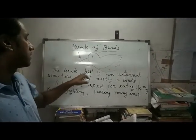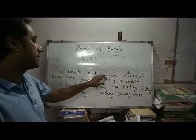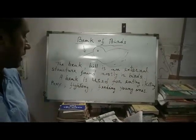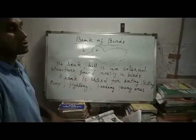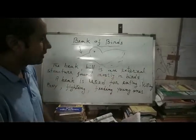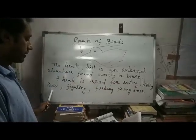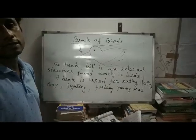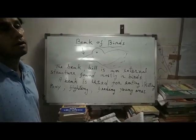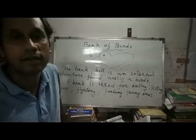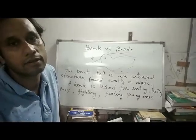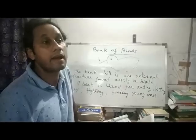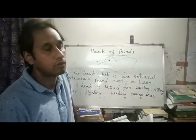The beak or bill is an external structure found mostly in birds. A beak is used for eating, killing prey, fighting, and feeding young ones. As you know, birds have no teeth, so instead of teeth they have a beak. It is very hard.